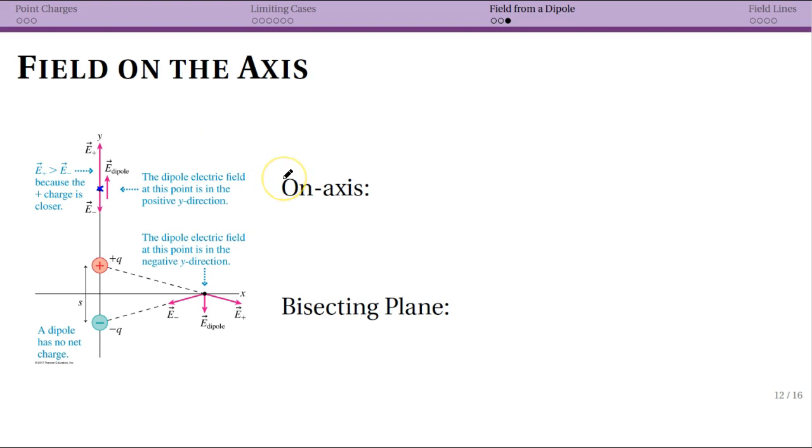So instead we have two special places. One is on the axis, which means along the dipole itself. The other special one is the bisecting plane, which means it cuts through the middle of the dipole perpendicular to it. So we can effectively calculate the field along this line and along that line. Not at the same time. From a symmetry point of view, you want to do one or the other. You can't just set up one calculation in a straightforward way that does both.